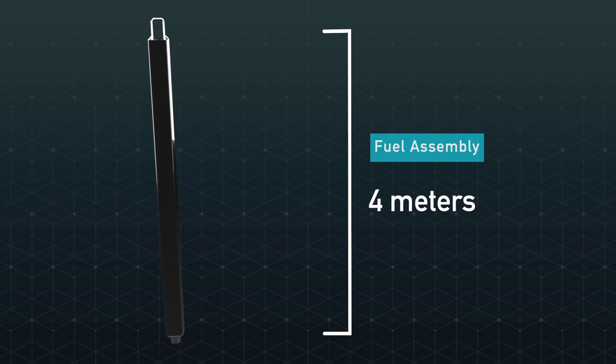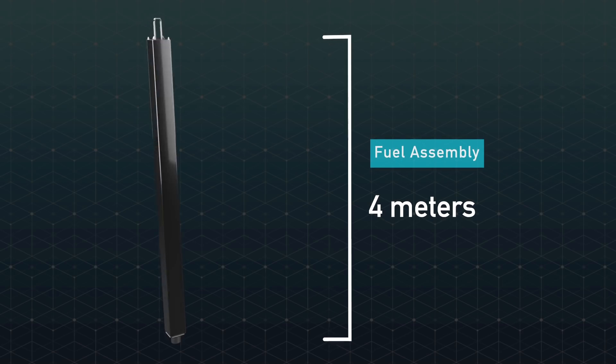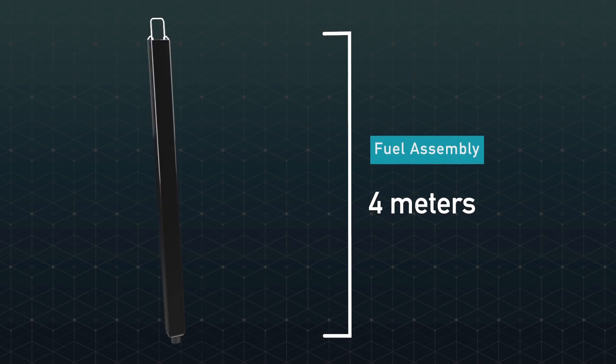In a pressurized water reactor, fuel assemblies measure 30.5 centimeters diagonally and typically 4 meters long. Each fuel assembly can hold more than 250 fuel rods and 100,000 pellets.